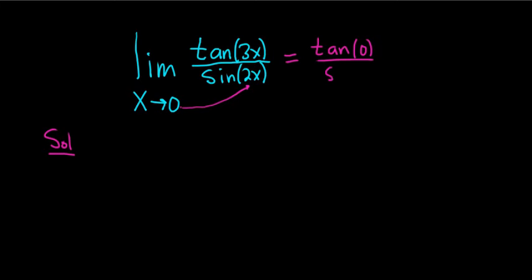Over sine of 2 times 0, so that's the sine of 0. Now the tangent of 0 is 0, and the sine of 0 is also 0. So we get 0 over 0.